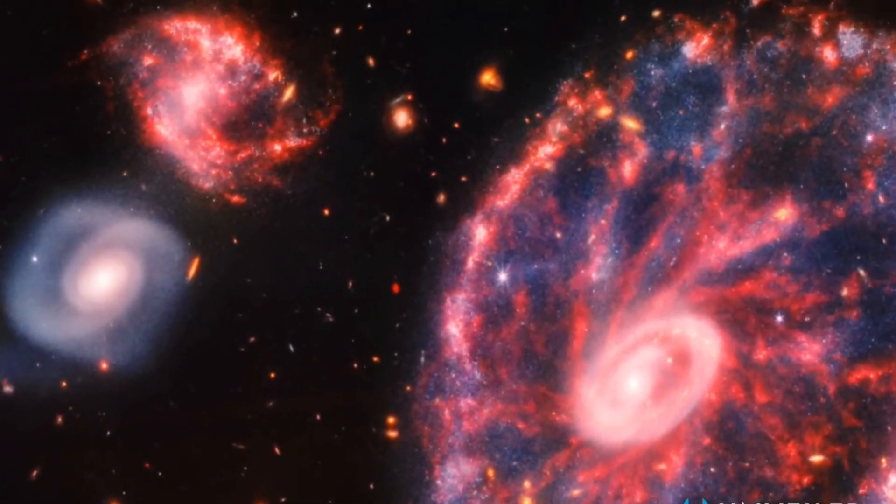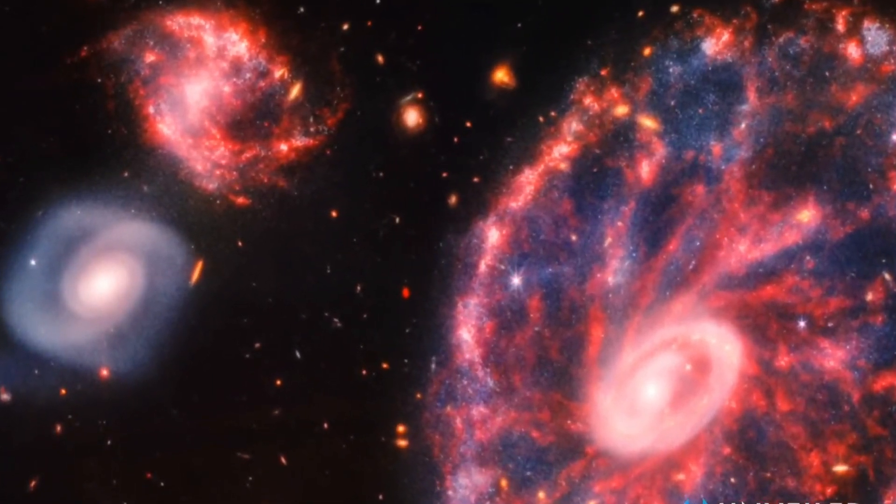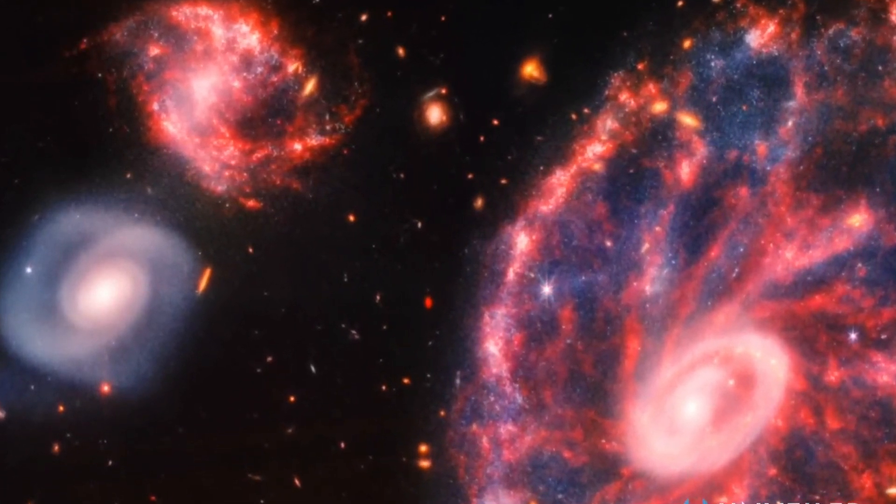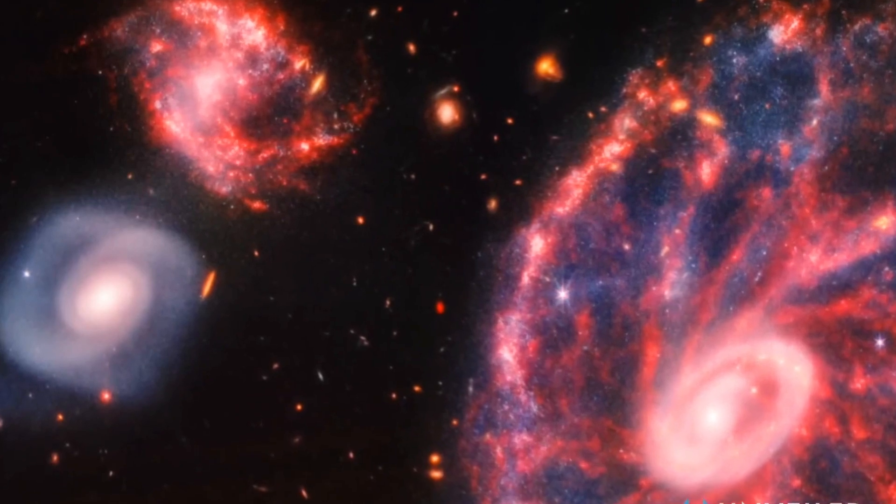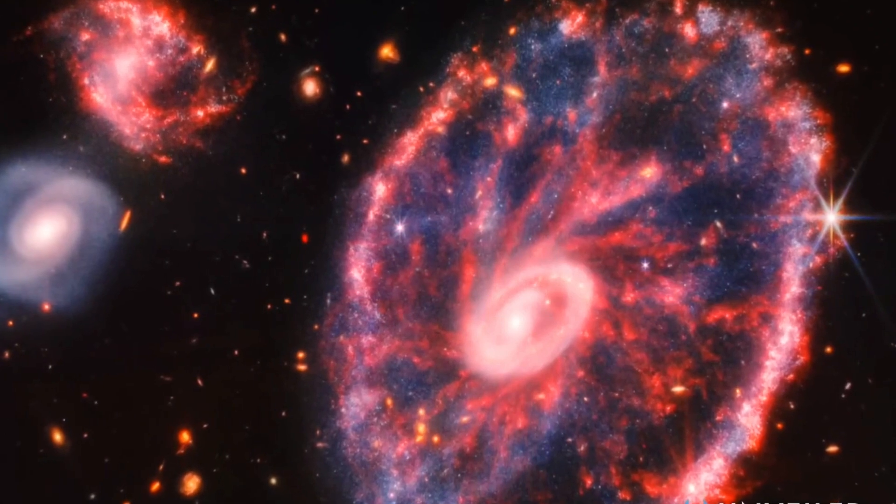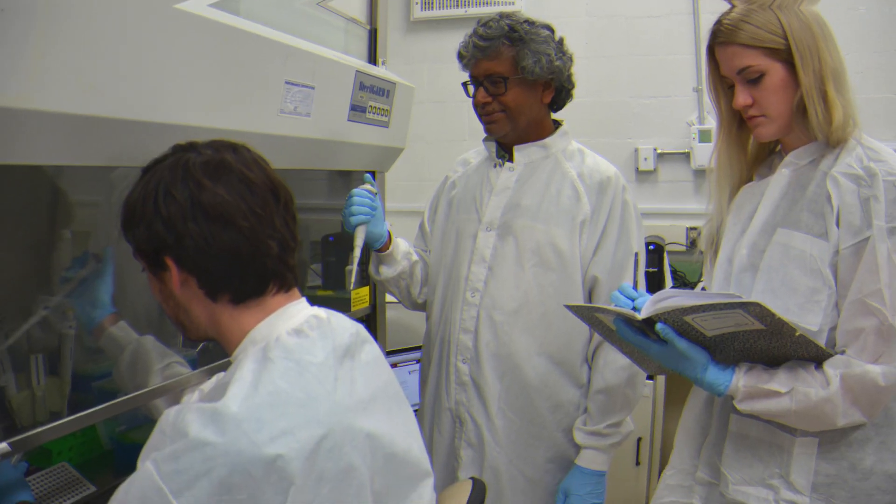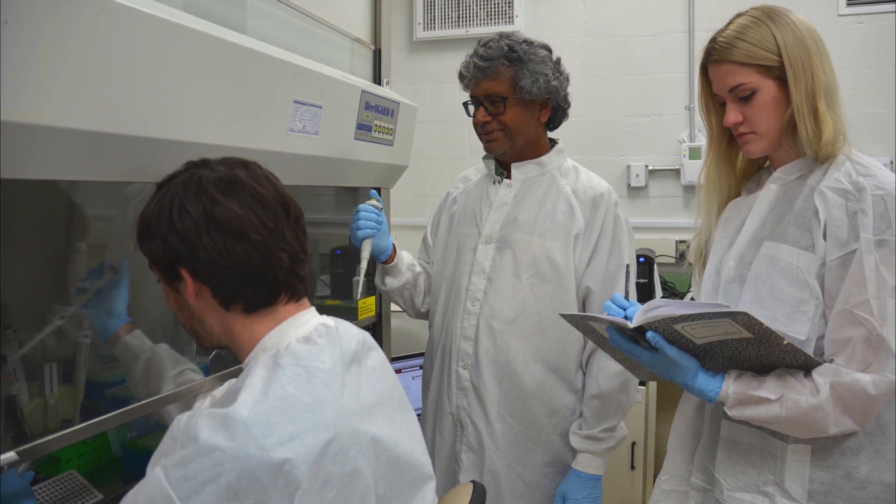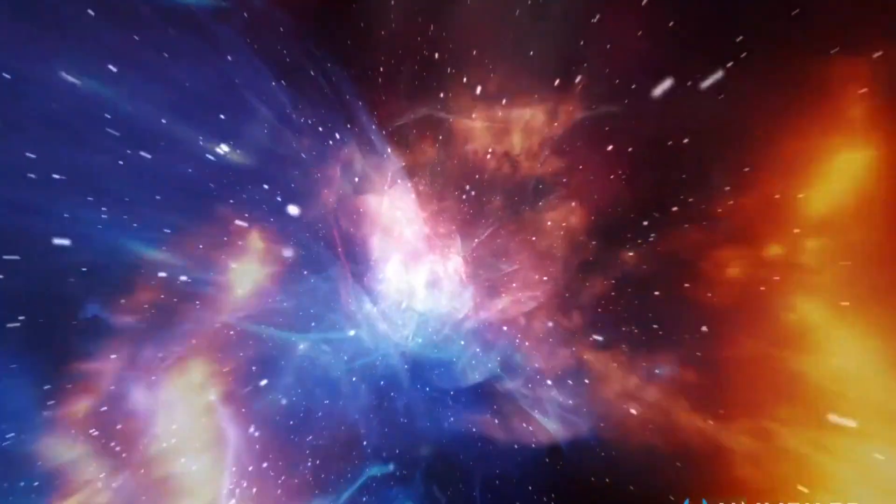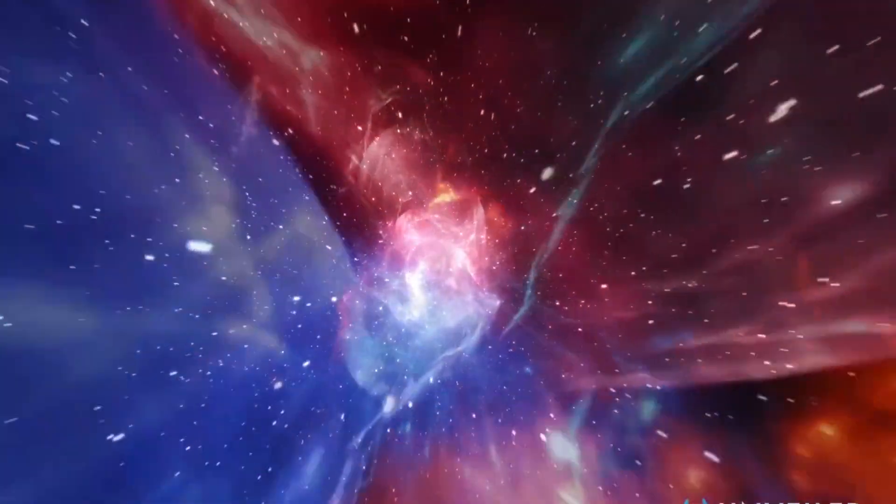The Cartwheel is a ring galaxy, a rather unusual form of galaxy that may be seen in the constellation Sculptor around 500 million light-years from Earth. What's crazy is that the Cartwheel was once a typical spiral galaxy like our Milky Way, according to scientists. But then, as we discussed, about 700 to 800 million years ago, it smashed into a companion galaxy.